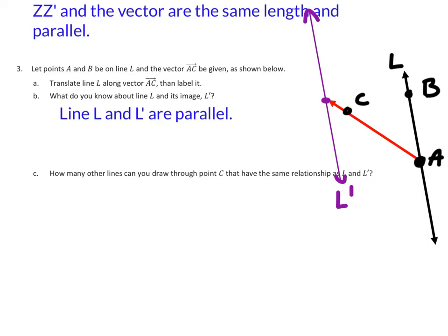Part C: How many other lines can you draw through point C and have the same relationship as L and L prime? So they'd have to be parallel. I can only draw one line through that point. So how many other lines could I draw through that point? None.